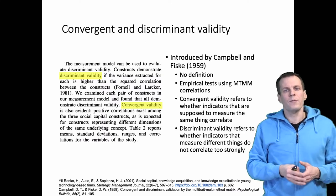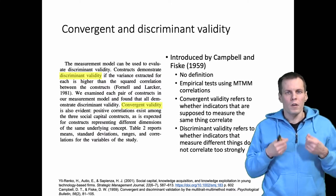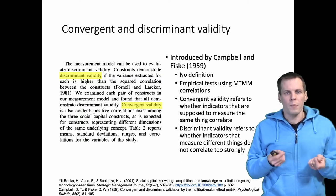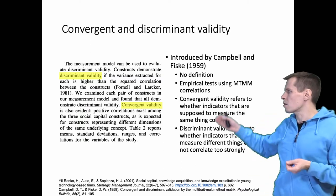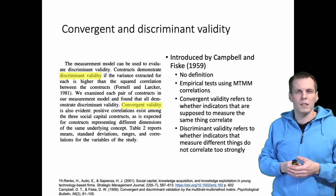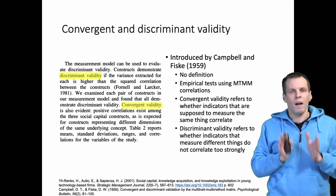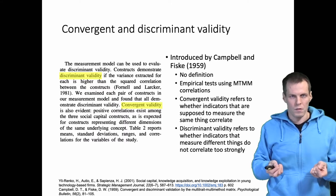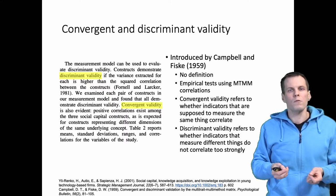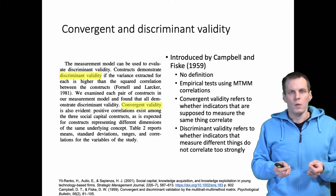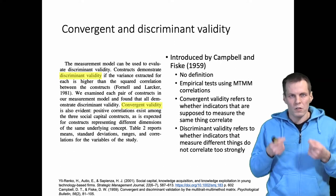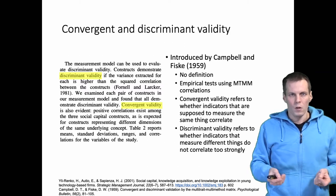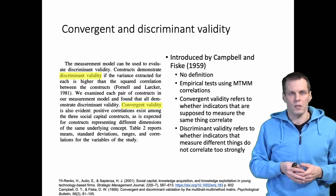Why is that? It relates to the history of how these two terms were introduced to the literature. The terms first appear in an article by Campbell and Fisk from 1959. That article was not really focused on validity itself, but on a validation technique using the multi-trait multi-method matrix, which is a special kind of correlation matrix.